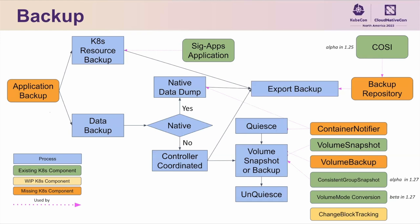This feature is beta since the 1.27 release. In the upcoming 1.29 release, we are going to enable the feature flag to true by default in the external snapshotter and external provisioner. So for any application that relies on this workflow, action is required — you must update your application accordingly, otherwise your application will fail. We have change block tracking in a yellow box here. This is the feature that the Data Protection Working Group has been actively working on, and Xiangqian will give a deep dive about it later.